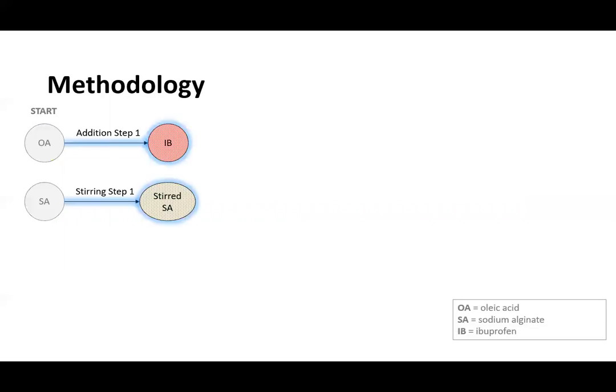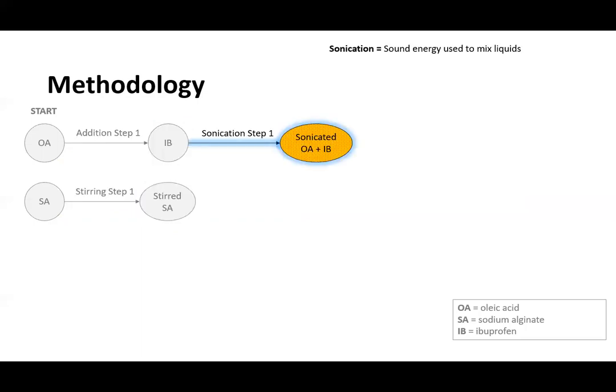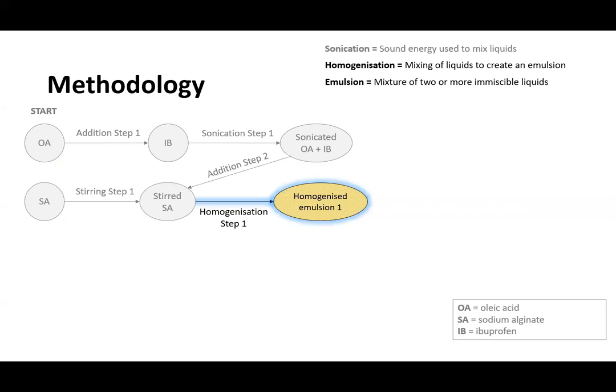The developed methodology begins with the raw materials, oleic acid and sodium alginate. Oleic acid is added to ibuprofen, the drug, and sodium alginate is stirred. The mixture of oleic acid and ibuprofen is sonicated, which is then added to the stirred sodium alginate.